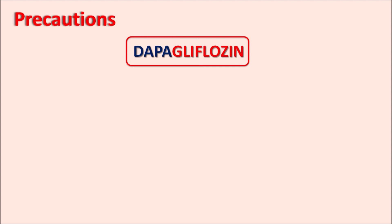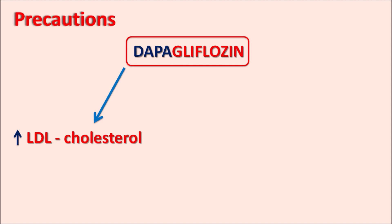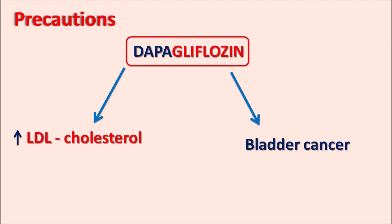Dapagliflozin can also increase LDL cholesterol levels, producing dyslipidemia by elevation of LDL cholesterol. This is significant in patients who have diabetes associated with atherosclerosis. This drug may also increase the risk of bladder cancer as well as hematuria — blood in the urine — because the primary site of action is the renal system, and on chronic use it may precipitate bladder cancer.